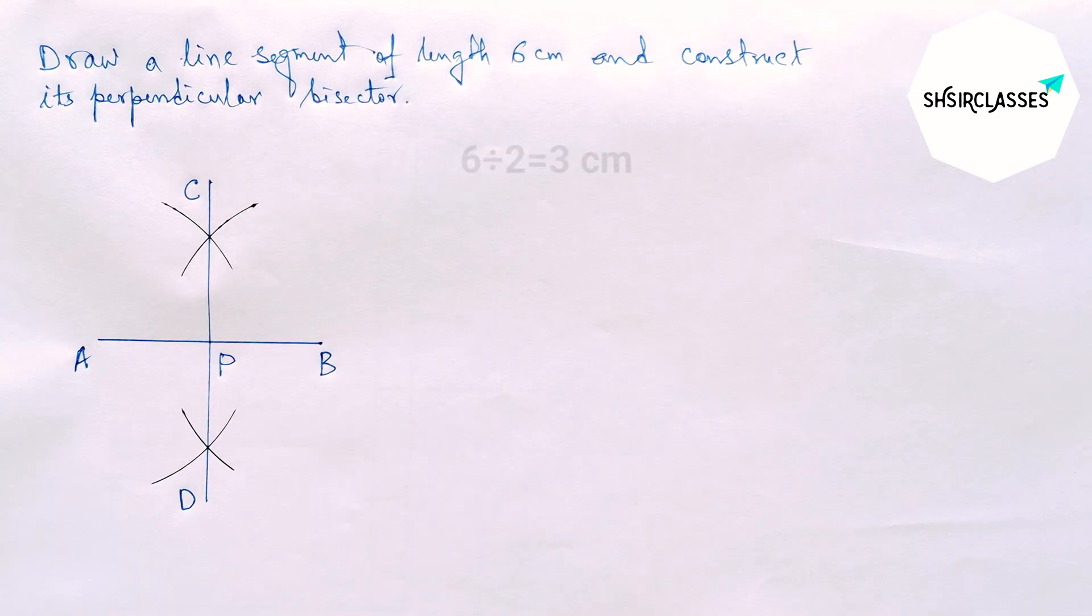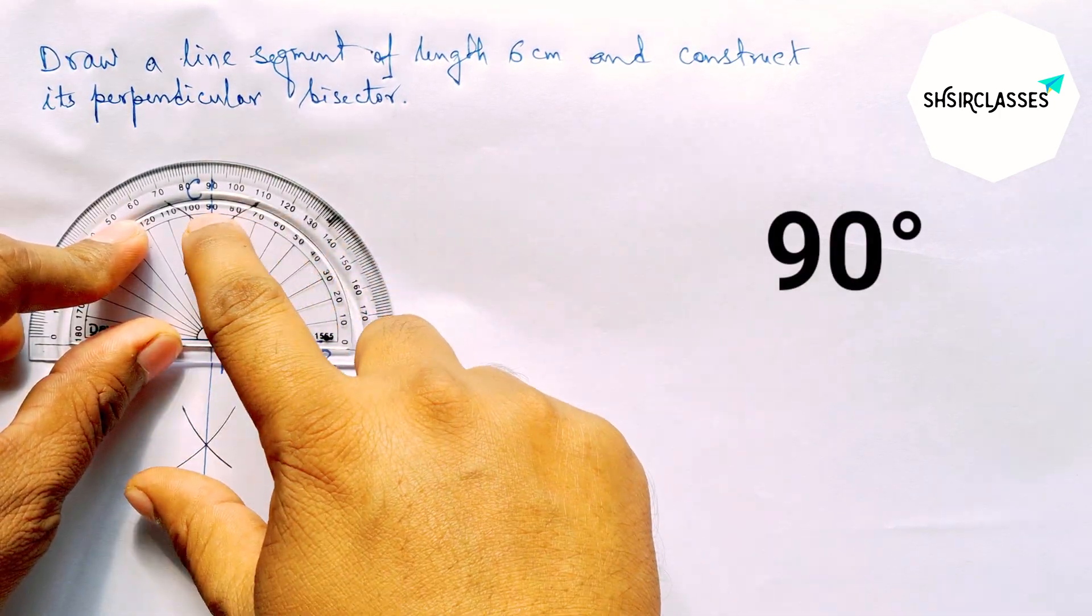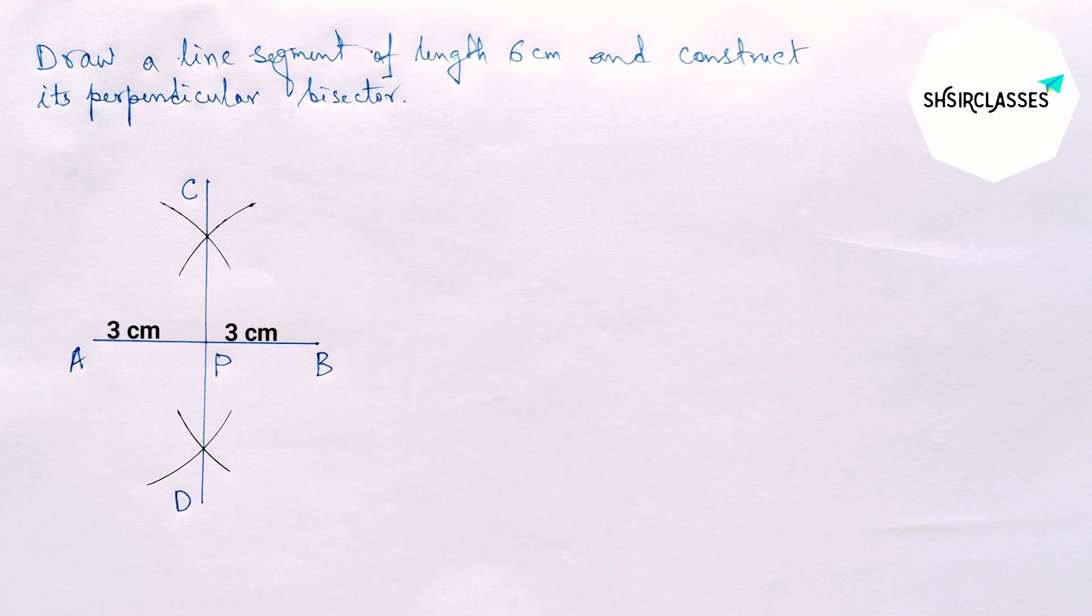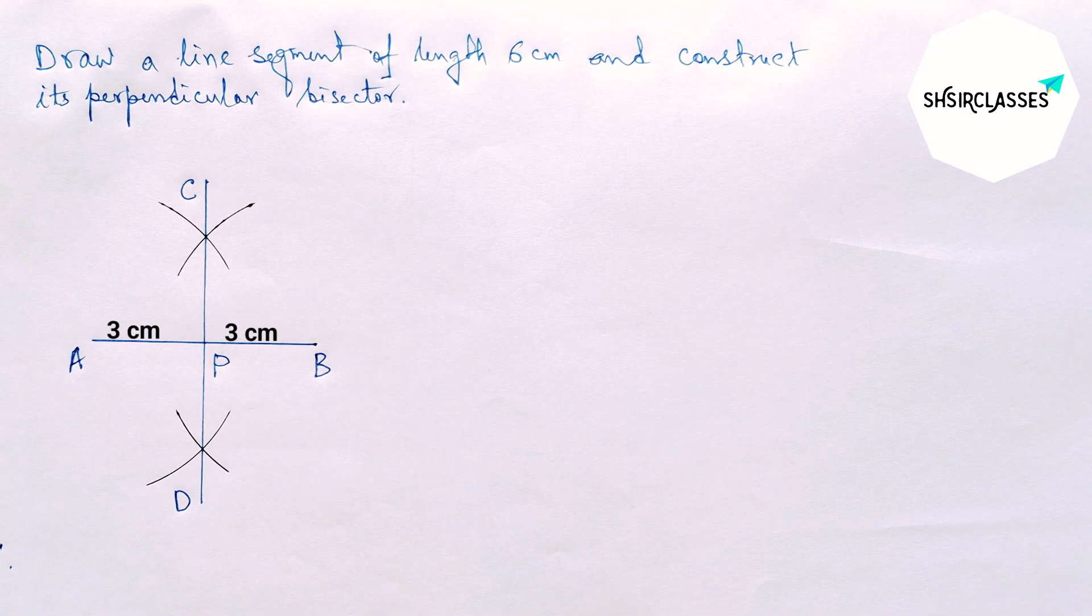This is perfectly bisected, and also checking the angle. So here this is perfectly 90 degrees, that means perpendicular.